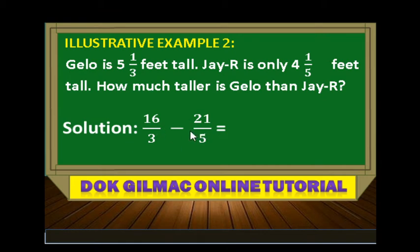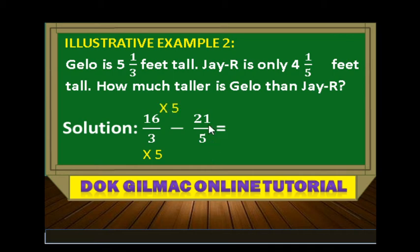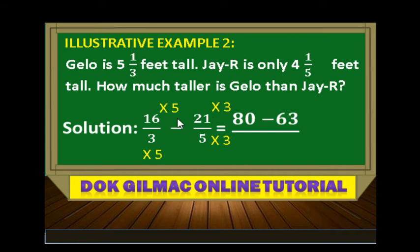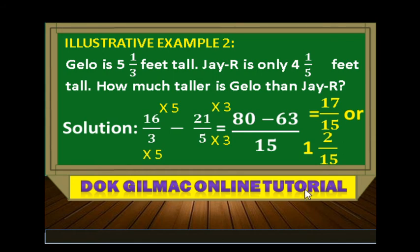Take note, these two given fractions are dissimilar fractions. Let's convert them into similar fractions. We have 15 as the LCD, so we multiply 3 by 5 and 16 by 5. Then for the second fraction, we multiply by 3: 21 by 3 and 5 by 3, to make these two fractions similar. So we have 16 times 5 is 80, minus 21 times 3 is 63, all over 15. So we have 17 over 15, or 1 and 2 over 15.